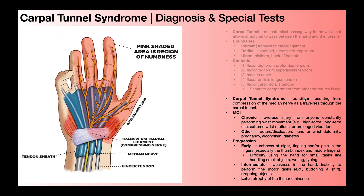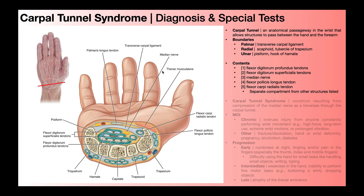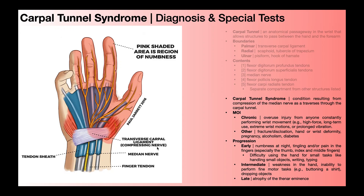Carpal tunnel syndrome is a condition resulting from compression of the median nerve as it traverses through the carpal tunnel. The median nerve goes from the forearm across the wrist through the carpal tunnel and then into the hand where it divides. As it goes through that carpal tunnel, it passes underneath the transverse carpal ligament. If something causes this ligament to become inflamed, shorten, or thicken, there's going to be less space within the carpal tunnel for the median nerve, causing compression that results in paresthesias — numbness, tingling, and even burning or shooting pain — and eventually weakness of muscles in the hand innervated by the median nerve.